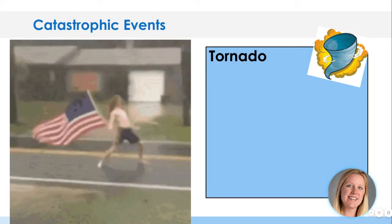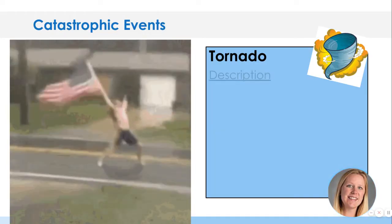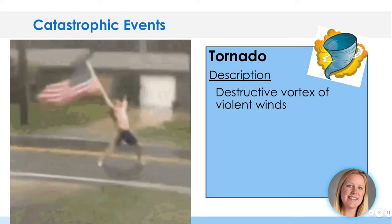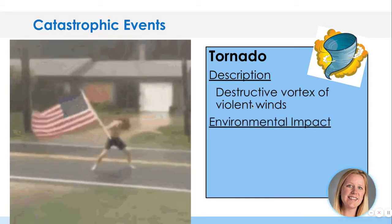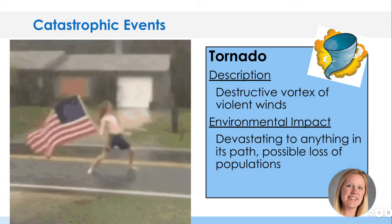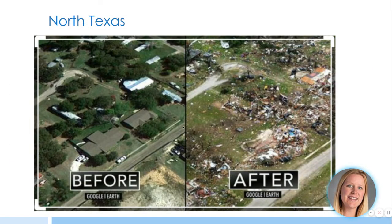Tornadoes. Hurricanes are generated over warm water, but tornadoes happen on land. You get a mix of warm and cold air, and it can cause a vortex of violent wind, devastating to anything in its path. There's possible loss of populations of different plants and animals. Looking at these trees, you can see — gone. Anything that lived in these trees, gone. The homes, gone. Catastrophic. And this was in North Texas.